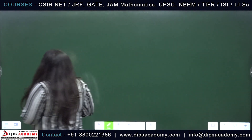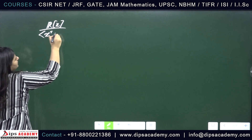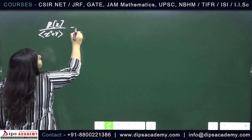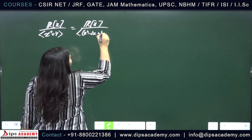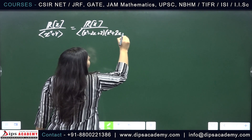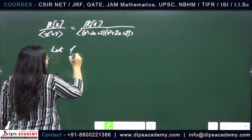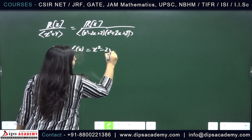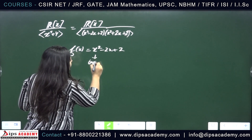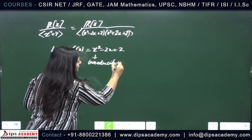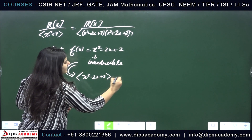We have the ring of polynomials R[x] with the ideal generated by x⁴ + 4. Since this polynomial is reducible, we can write it using the factors (x² − 2x + 2) and (x² + 2x + 2). Now let f(x) = x² − 2x + 2. This is an irreducible polynomial in R[x], which implies the ideal generated by this polynomial is maximal.